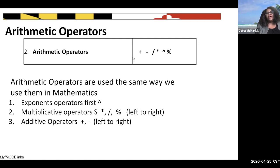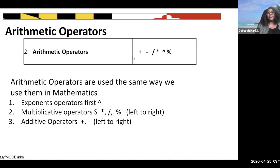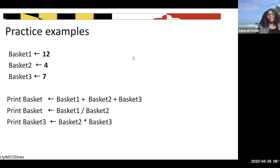Let's go here and have an example. We have numbers in our baskets: basket one has 12, basket two has four, and basket three contains seven. So if I ask you to print basket one, which is 12, and we add four, then add seven - what will the basket contain?